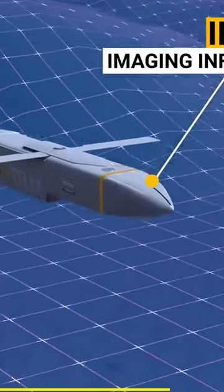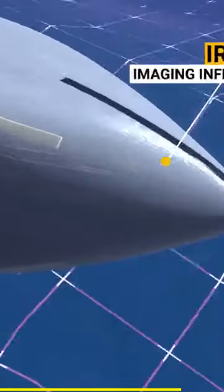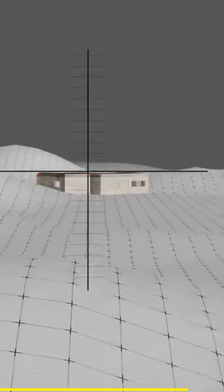This is how it works. It uses the IR sensor imaging infrared seeker to track and process images, helping it glide to its target.